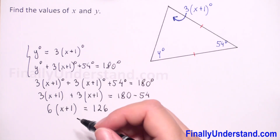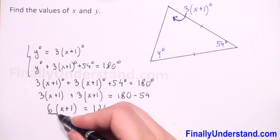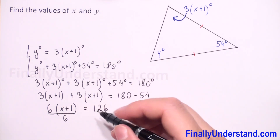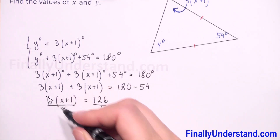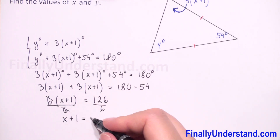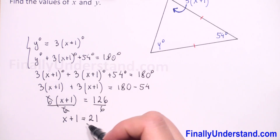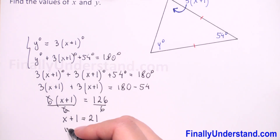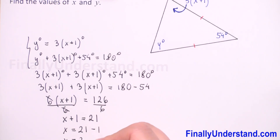Now I will divide both sides by six. Six and six cancel, so we have x plus one is equal to 21. Moving one to the right side, we get x is equal to 21 minus one. So x is equal to 20. We found x.